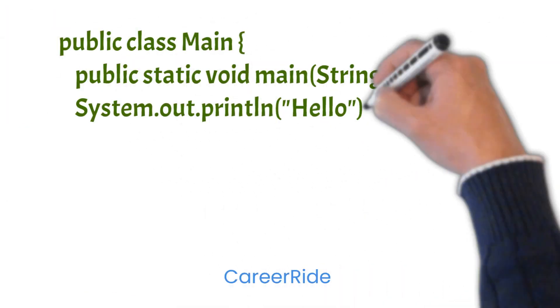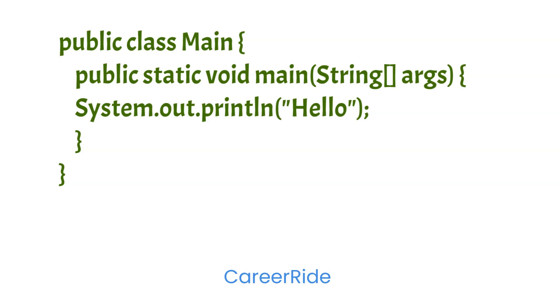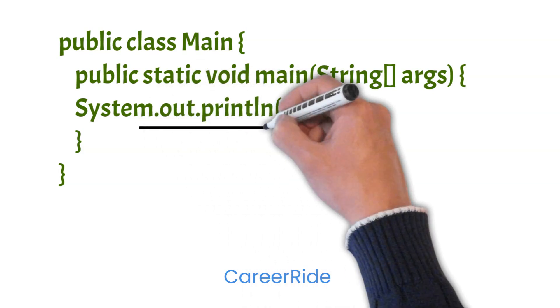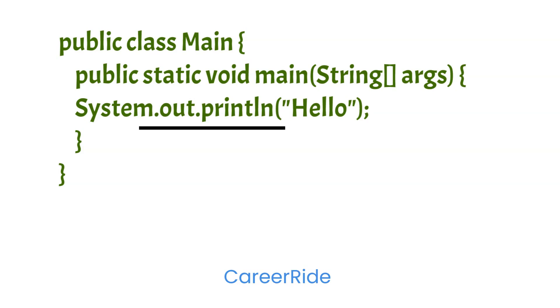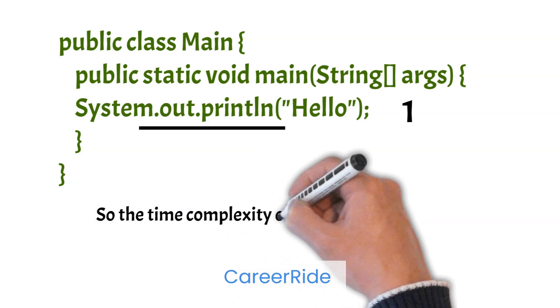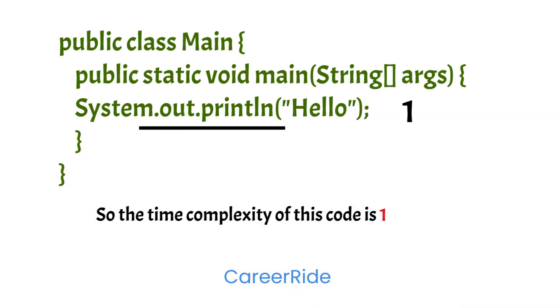Let's have an example. In this example, the number of operations to print 'hello' once on the screen is one, and we can consider that it would take some constant time to run — let's say one. So the time complexity of this code is one.